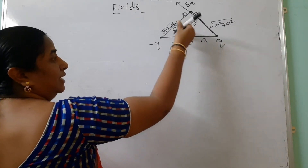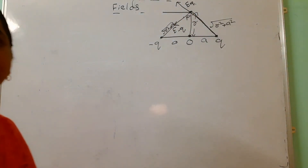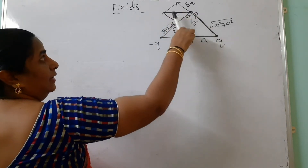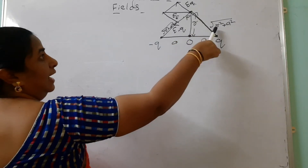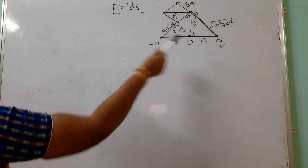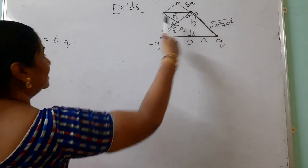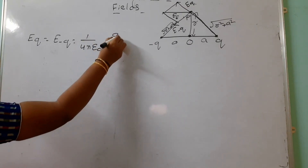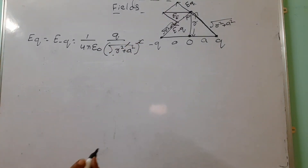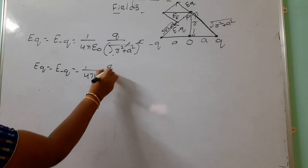The intensity due to the negative charge acts towards the negative charge. These two intensities act as adjacent sides of a parallelogram, with the resultant along the diagonal. Since both distances are equal (√(R²+A²)), both magnitudes are equal: E_Q = E_−Q = (1/4πε₀) × Q/(R²+A²).